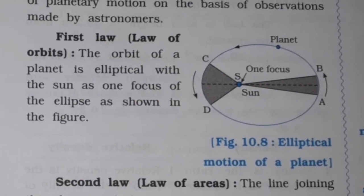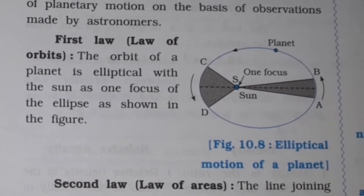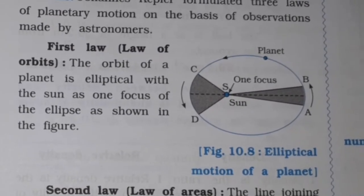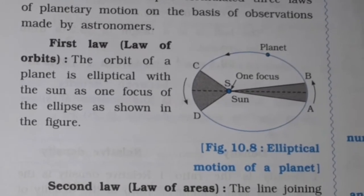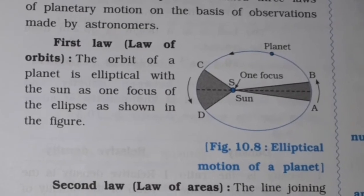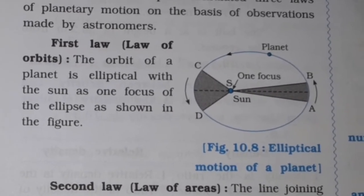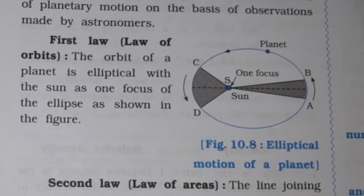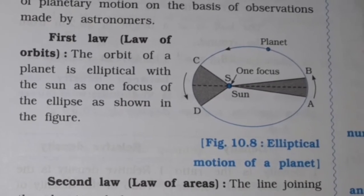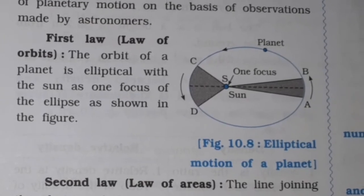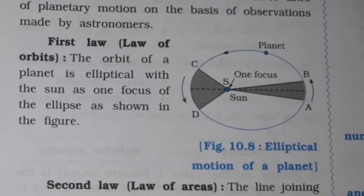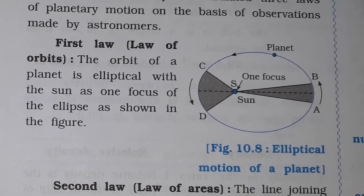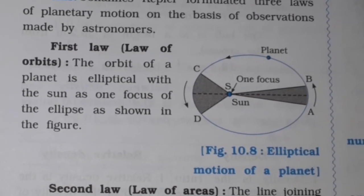Now we discuss Kepler's second law. The line joining the planet and the sun sweeps equal areas in equal intervals of time. As we can see in the figure, if the time interval from A to B is the same as from C to D, then the area of OAB is equal to the area of COD. This is the second law of Kepler.